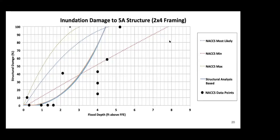This is one of the damage curves we were able to develop on a 5A structure — single story residence with no basement. The dotted lines show the curve developed by an expert panel from the NACCS study, but those black dots are the individual data points, highlighting the very low correlation in the previous data. Our curves are shown in light blue. The key nuance is that the NACCS study assessed percentage of damage on an entire structure, whereas our method is based on the capacity of individual members and studs in the house.